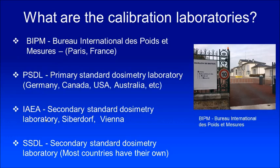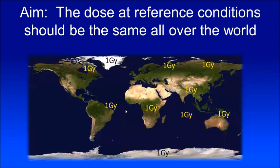IAEA — the International Atomic Energy Agency — has a laboratory for dosimetry and it is a secondary standard dosimetry laboratory, but they provide a significant amount of support for various countries and hospitals.